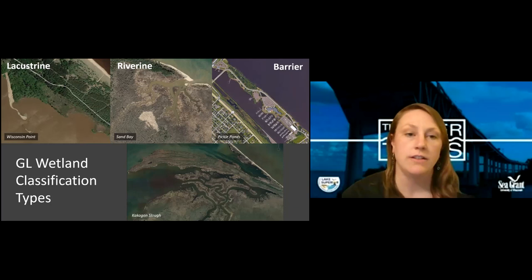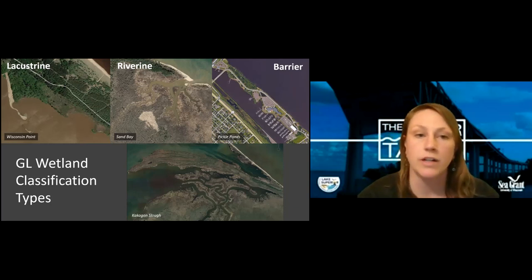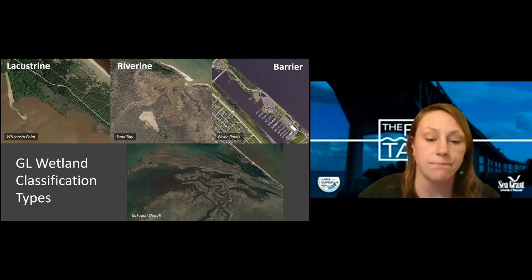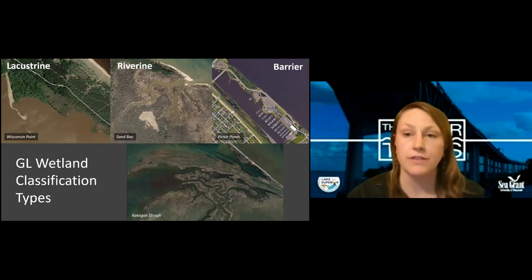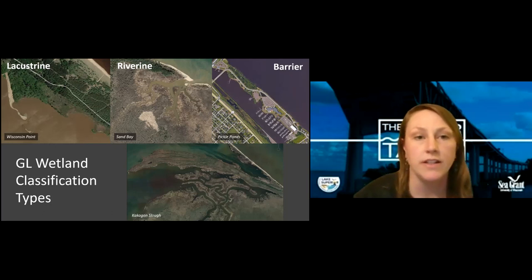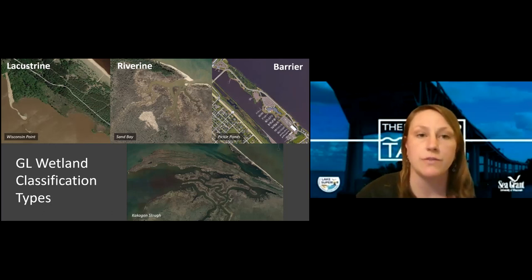Lacustrine wetlands typically have lots of inputs from seiche and storm surges, plus water inputs draining off the land. These are often more subject to impacts and may be among the first to get invasive species.